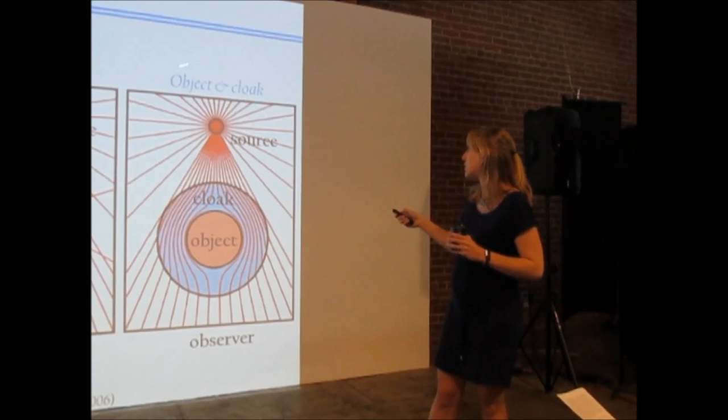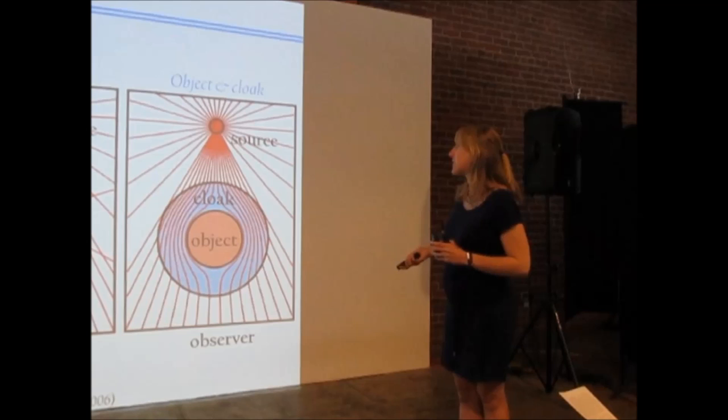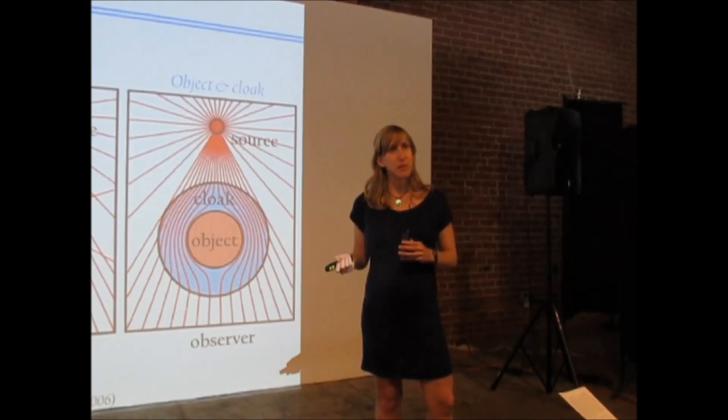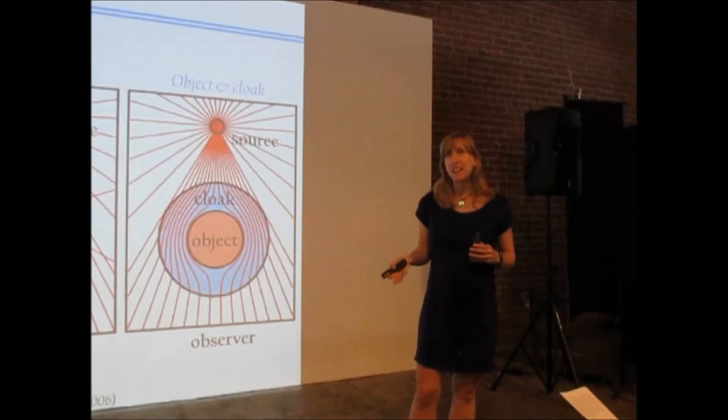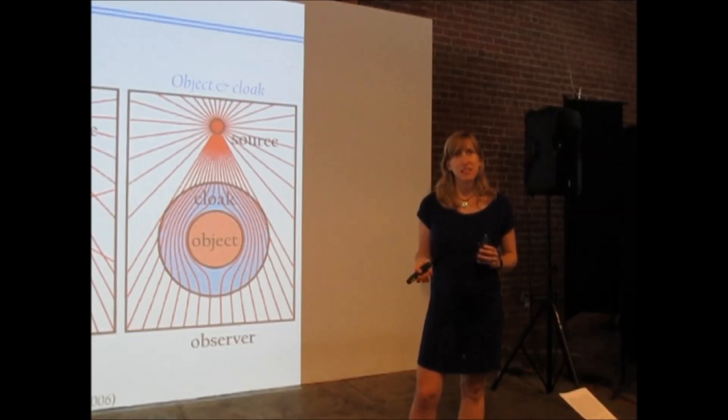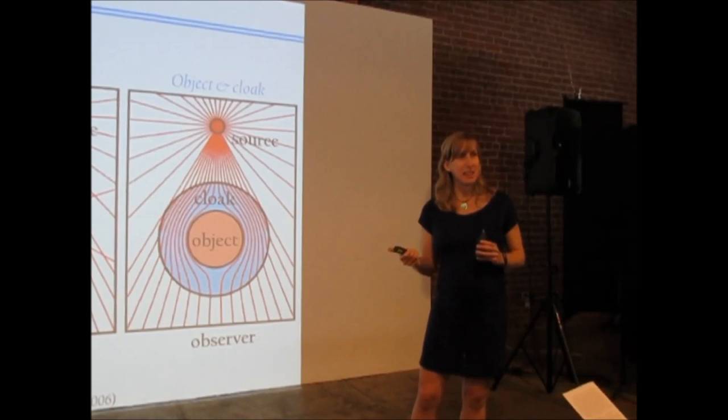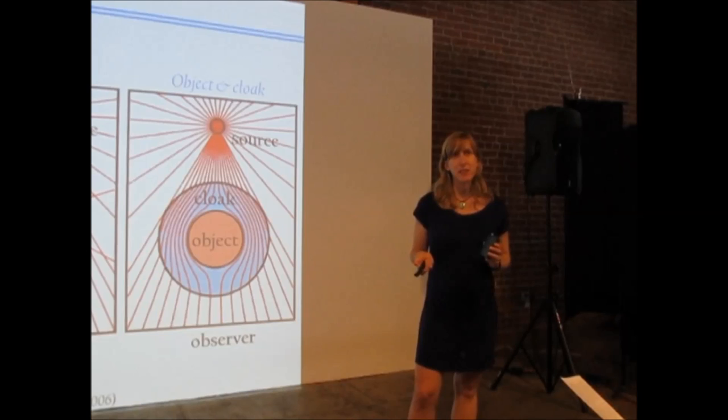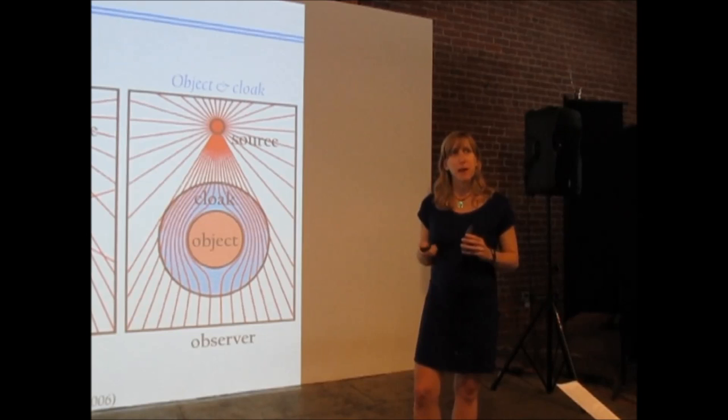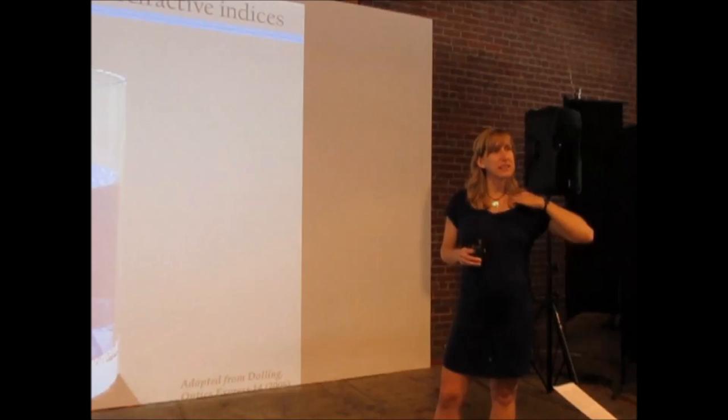It turns out that the refractive index profile needed to do this is one such that the index of the material has to be less than one, so it has to be less than air, and then you also nominally want to be able to tune that refractive index to be close to zero, and in some cases even negative. And unfortunately, nature doesn't provide us such negative refractive index materials at optical frequencies. So what we have to do is go back to the lab and say, why doesn't nature give us those materials? And then, can we make them in the lab? It turns out that the laws of physics don't prevent a negative index material from existing at visible frequencies. It's just that it's really hard because at very high frequencies, the magnetic response of materials is very weak.